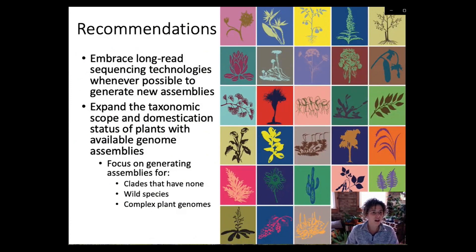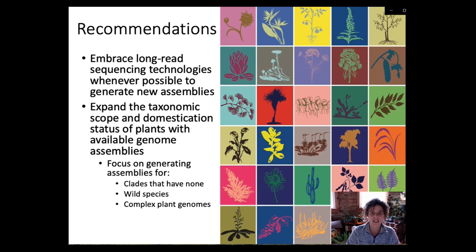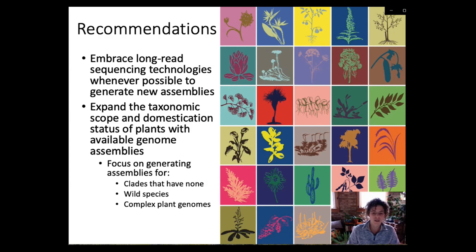Based on these analyses we offered a couple of recommendations. The first is to really embrace long-read sequencing technologies to generate new assemblies — given the massive disparity in quality, the importance of these technologies cannot be overstated. Secondly, we should continue to expand the taxonomic scope of species we're sequencing, focusing on clades that have no assemblies, on wild species which are extremely diverse and underexplored, and on species with complex polyploid genomes. These are exciting directions we see the field heading.